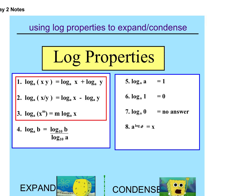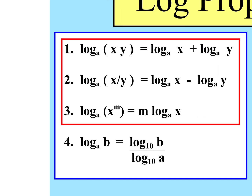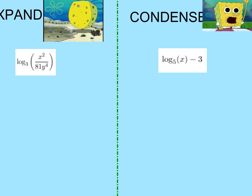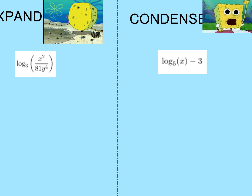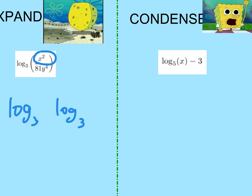Let's zoom in on these three properties, which are good examples. Now let's do the ones in the notes. This is expanding — expanding means you get lots of logs. They're all going to be log base three. For the top, that's just x squared. Then since this is a divide, I'm going to use a minus. Minus log base three of all of 81 y to the fourth.